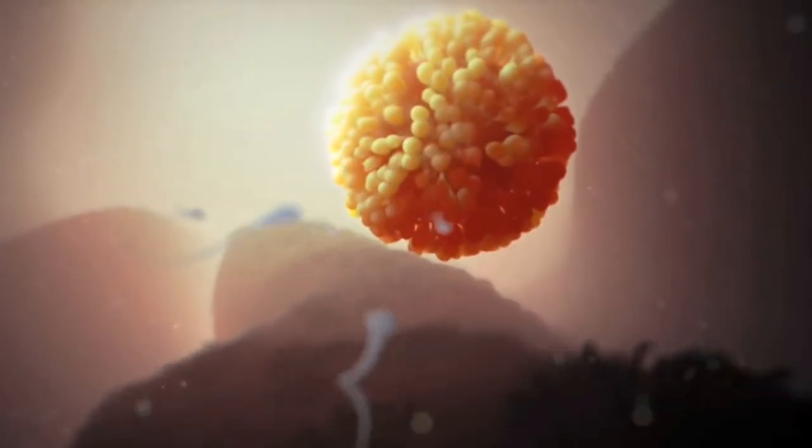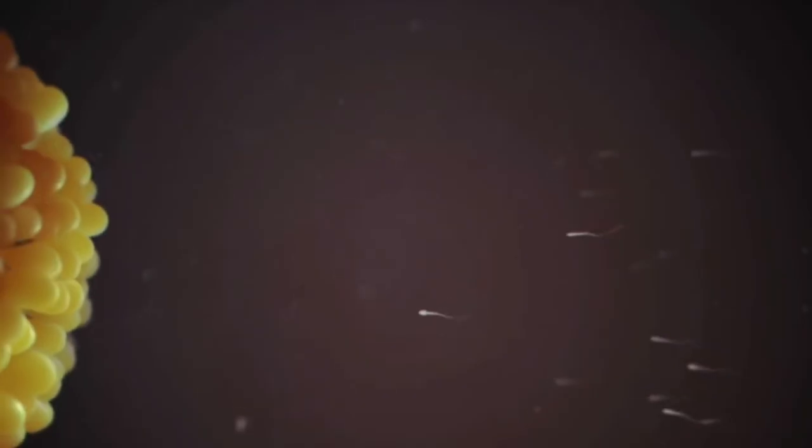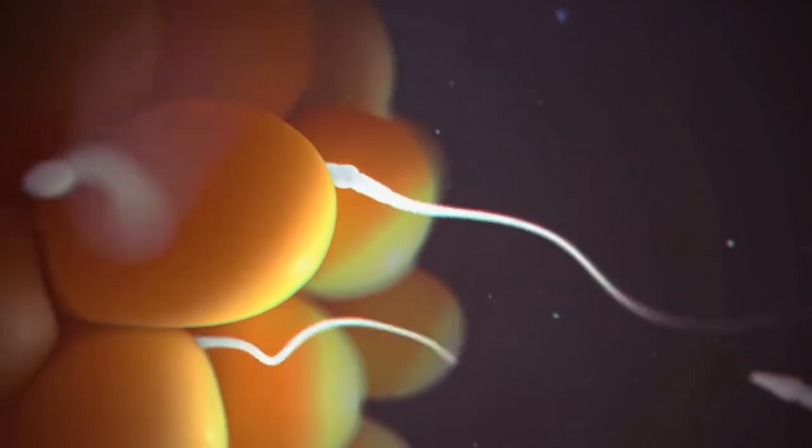At long last, the sperm reach the egg. Only a few dozen of the original 300 million sperm remain. The egg is covered with a layer of cells called the corona radiata. The sperm must push through this layer to reach the outer layer of the egg, the zona pellucida.